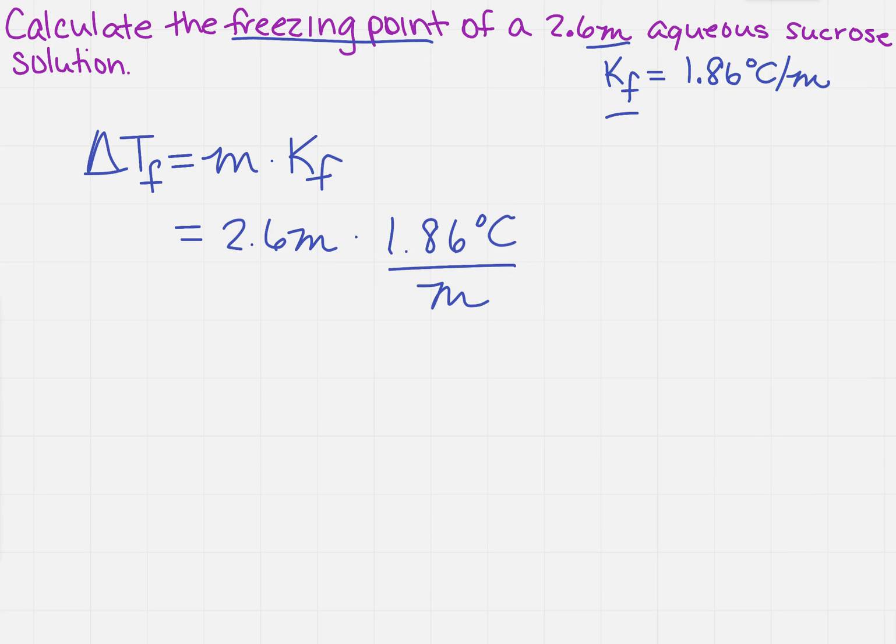Now, why did I write it that way? Because I want to make sure that my units are going to cancel, because if they don't cancel, then I know that I don't have the correct constant. So I have degrees C, which I know is a change in temperature. When I multiply these two together, I get 4.836 degrees C.